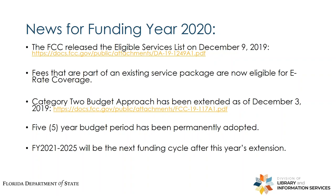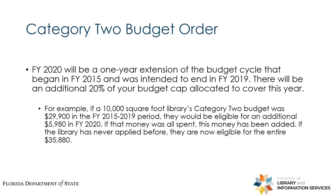They also put out a recent news brief — those things I send to the FloraLib listserv every week — clarifying that you no longer have to get individual service packages broken down into allowable and non-allowable allocations if a service is provided as part of a service package anyway. And here's the big one: the funding approach for Category 2 has been permanently adopted — the funding being set for five-year increments. The next cycle will be funding year 2021 to 2025. Funding year 2020 will be a one-year extension of the budget cycle that began in 2015 and was intended to end in 2019.